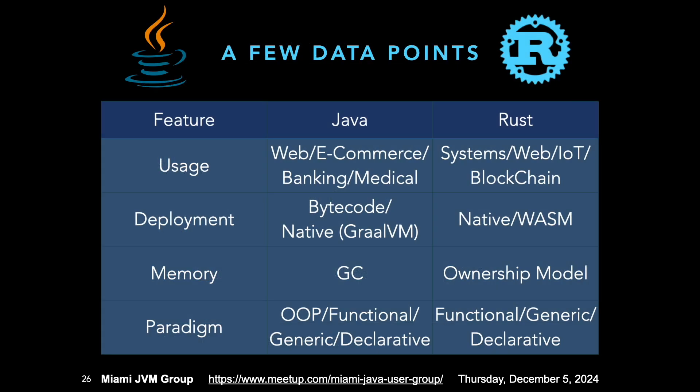A bit more comparison: you'll see that a lot of web, banking, and medical applications are Java, while Rust is used for systems, web, and blockchain. The deployment model for Java is bytecode, except for GraalVM which generates native images. For Rust, it's native binaries with WASM as an intermediate format. Rust has no garbage collector — it uses the ownership model instead. The paradigms in Java are multi-paradigm, and so is Rust, but notably classic object-oriented inheritance is not in Rust.